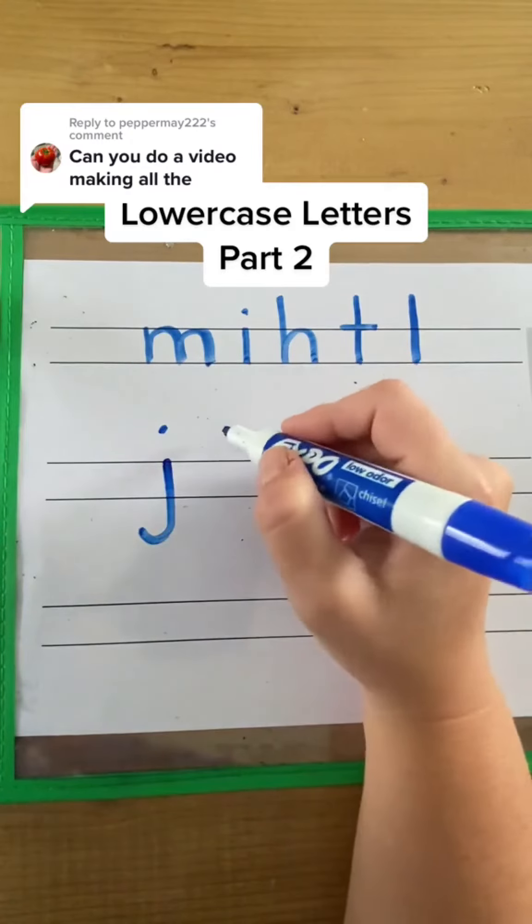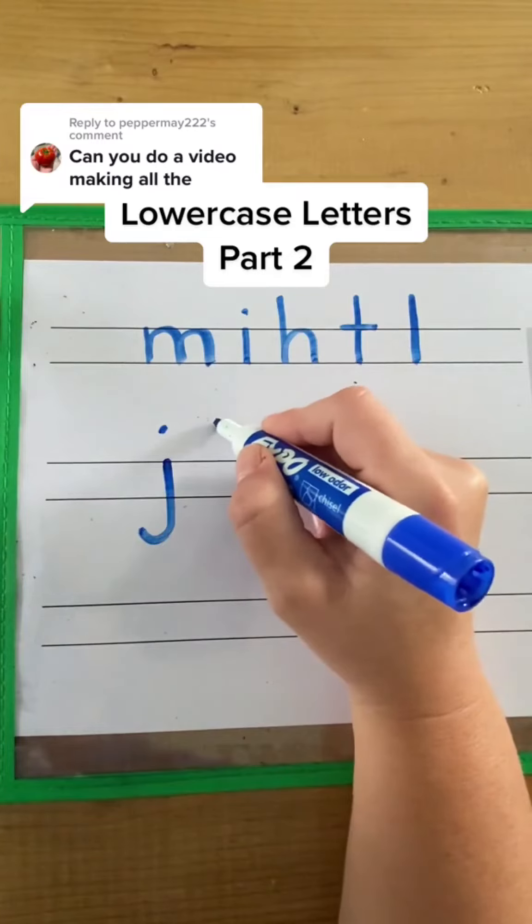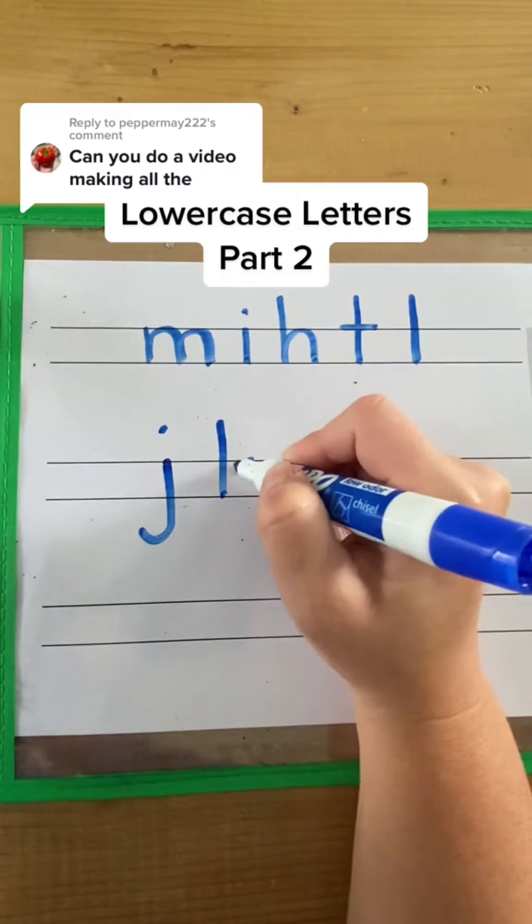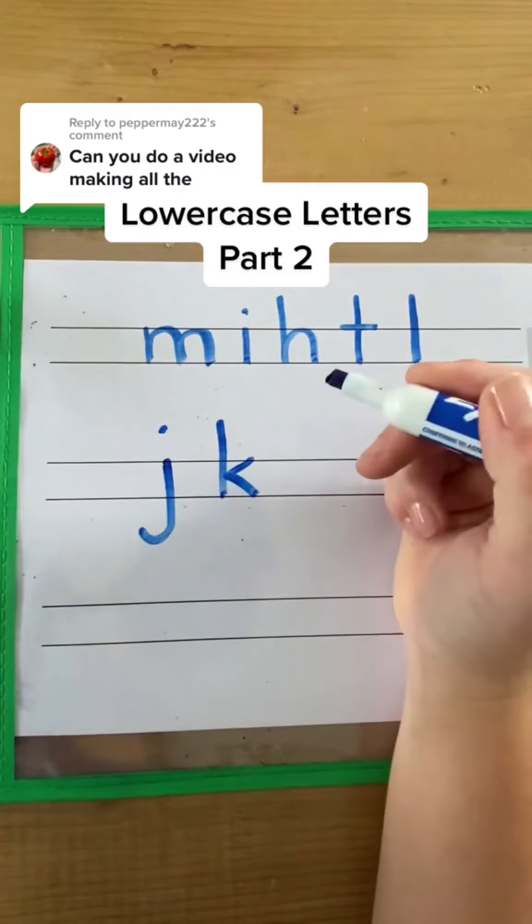And the next letter is K. This is a tricky one for preschoolers. It's one big line down. Then we have to frog jump over here to nowhere. We're not touching anything, and we're going to kick and slide away with two little lines.